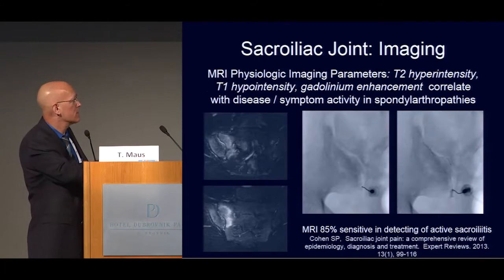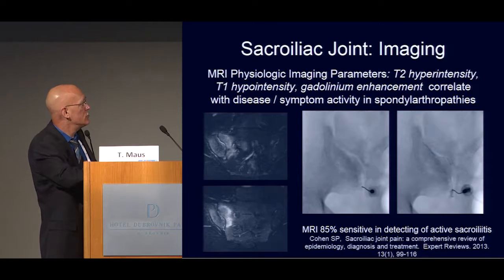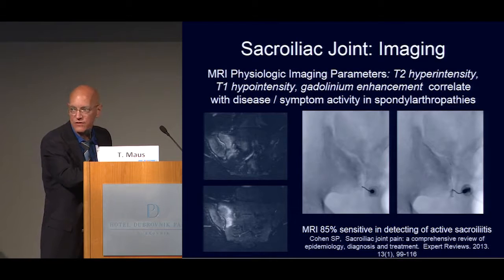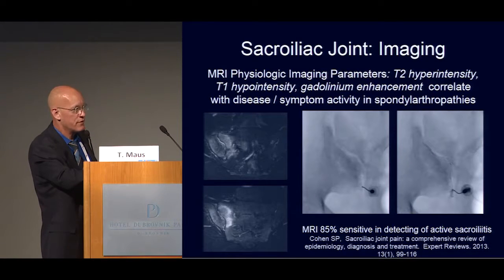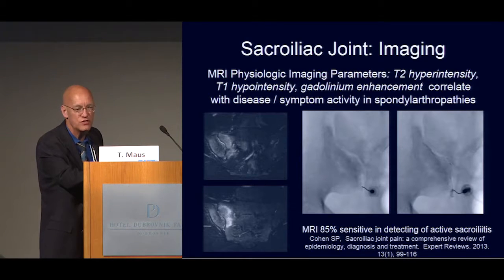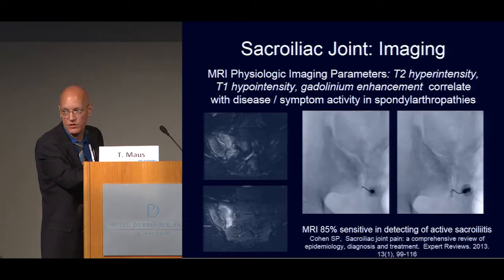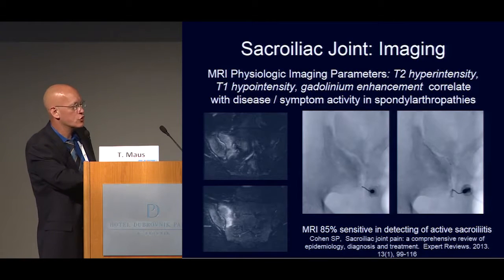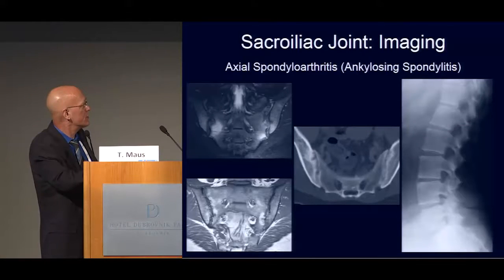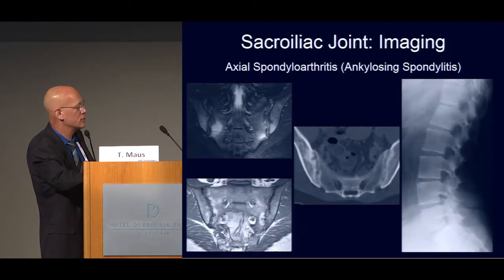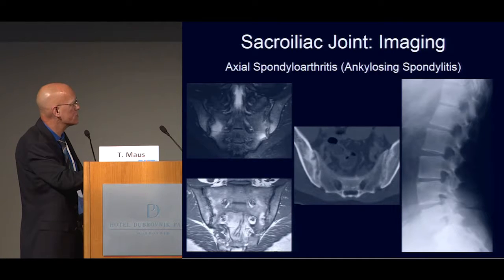MRI imaging characteristics are also physiologic in nature. T2 hyperintensity or T1 hypointensity are manifestations of edema; gadolinium enhancement is a manifestation of hyperemia and leaky capillaries. In patients with inflammatory spondyloarthropathies, this correlates very well with disease activity. However, it's not a good predictor of pain in the non-inflammatory spondyloarthropathy patient with simple osteoarthritis or sacroiliac joint dysfunction. A patient with axial spondyloarthritis — formerly called ankylosing spondylitis — shows T2 hyperintensity and fatty deposition on T1-weighted images, with CT showing sclerosis, subchondral erosions, widening of the joint space, and characteristic squaring and sclerosis of lumbar vertebral bodies.